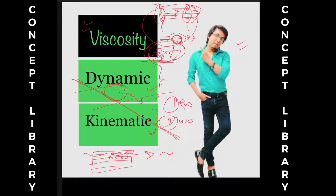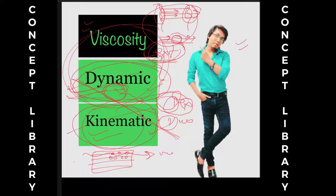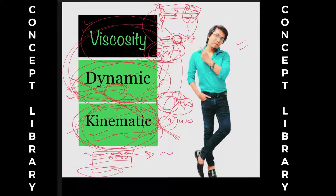Dynamic viscosity comes into picture when the fluid is coming into motion because of external force, and kinematic viscosity comes into picture when the fluid is flowing because of its own weight. In both kinds of motion, fluid will apply resistance. When the fluid provides resistance due to external force, we discuss dynamic viscosity. When the fluid provides resistance due to flow caused only by its own weight, that resistance is kinematic viscosity.